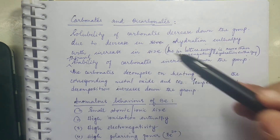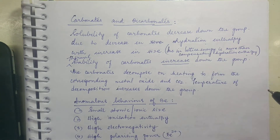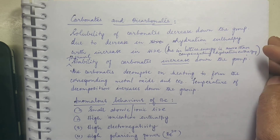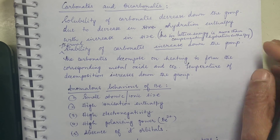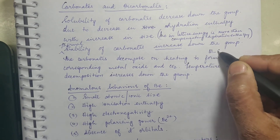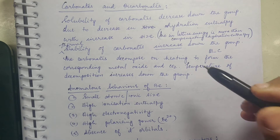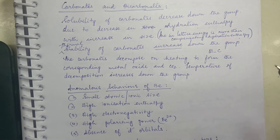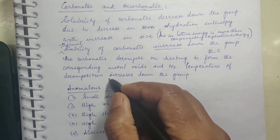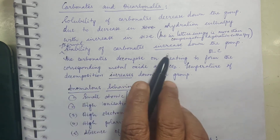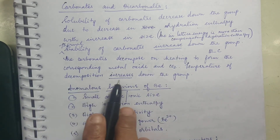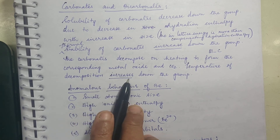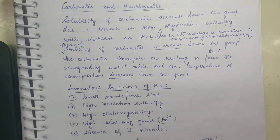The thermal stability of carbonates increases down the group. Thermal stability increasing means the M-C bond strength is greater. These carbonates decompose on heating to form the corresponding metal oxide and CO2, and the temperature of decomposition increases down the group — that is what thermal stability increase means. To decompose a carbonate lower in the group, you have to supply a higher temperature.